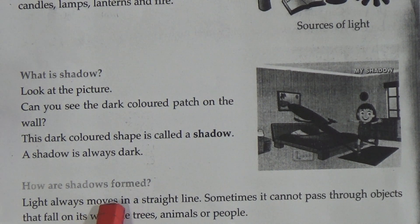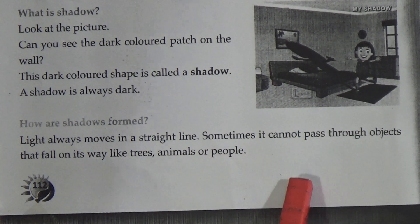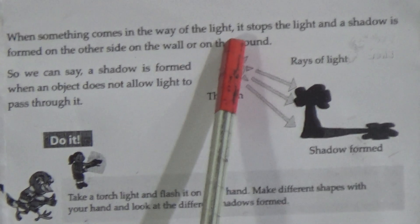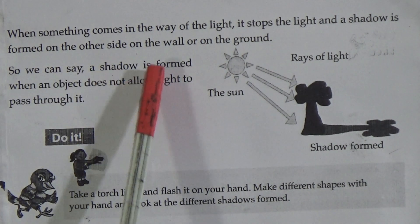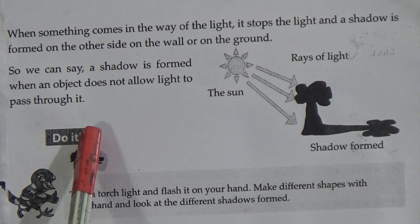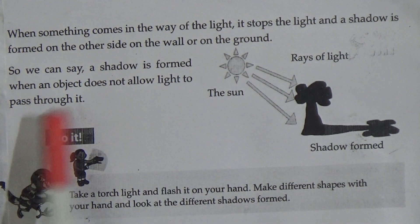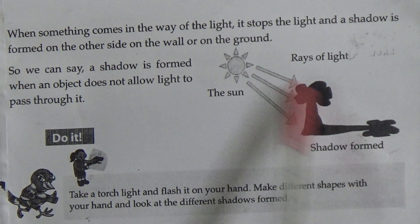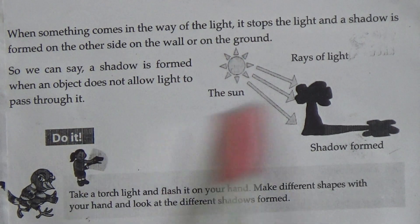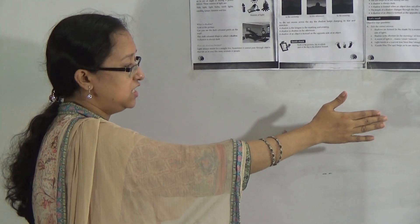How are shadows formed? Light always moves in a straight line. Sometimes it cannot pass through objects that fall on its way, like trees, animals, or people. When something comes in the way of the light, it stops the light and a shadow is formed on the other side of the wall or on the ground. A shadow is formed when an object does not allow light to pass through it. Here, the sun gives light on a tree, and beside the tree, the shadow is created. When light came to my hand and cannot pass through, a shadow is created on this board.